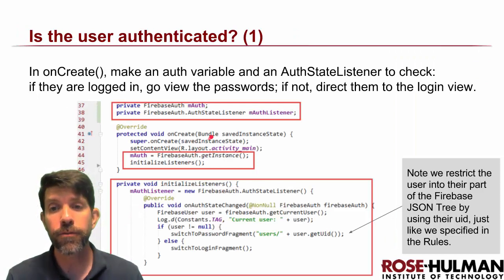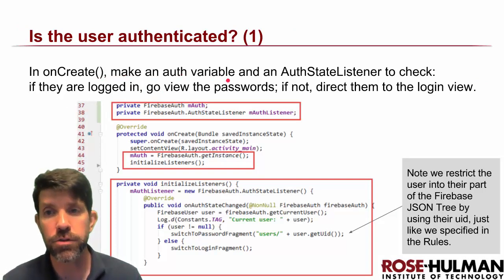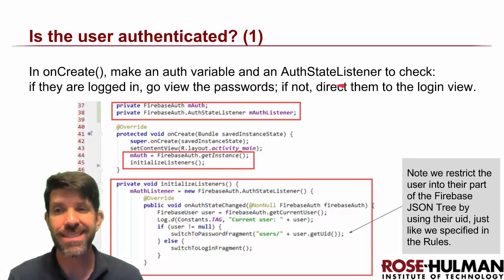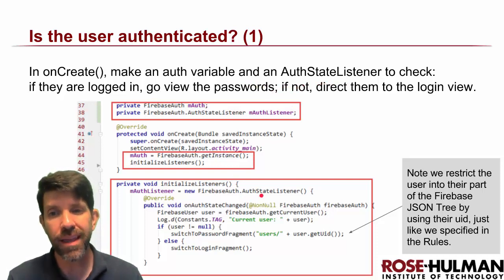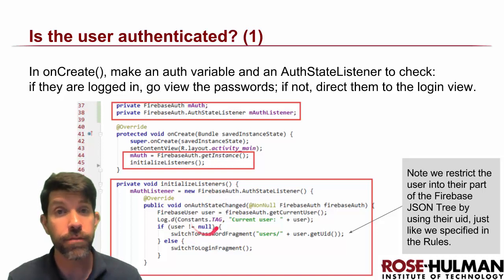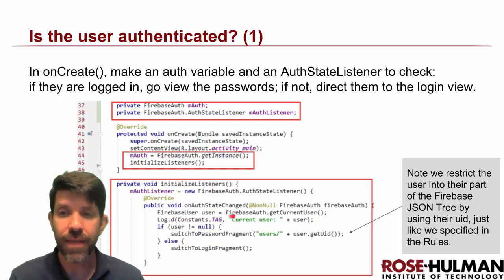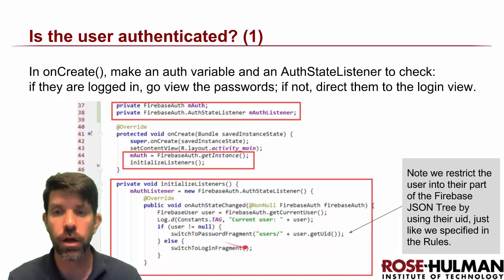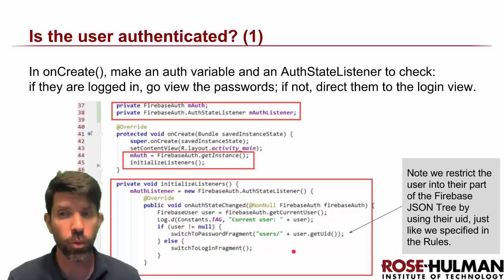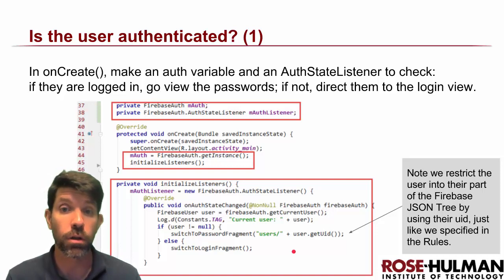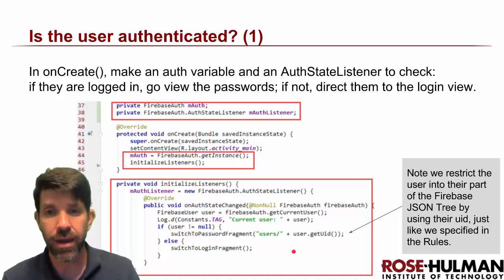The first thing we need to do is check if the user is authenticated. The easiest way — and this works across all authentication methods — is to use an auth state listener. Every time they log in, log out, or anything changes their auth state, it fires an event triggering our onAuthStateChanged callback, which gives back an authentication object. We extract the user from it: if authenticated, go to passwords; if not, go to login.